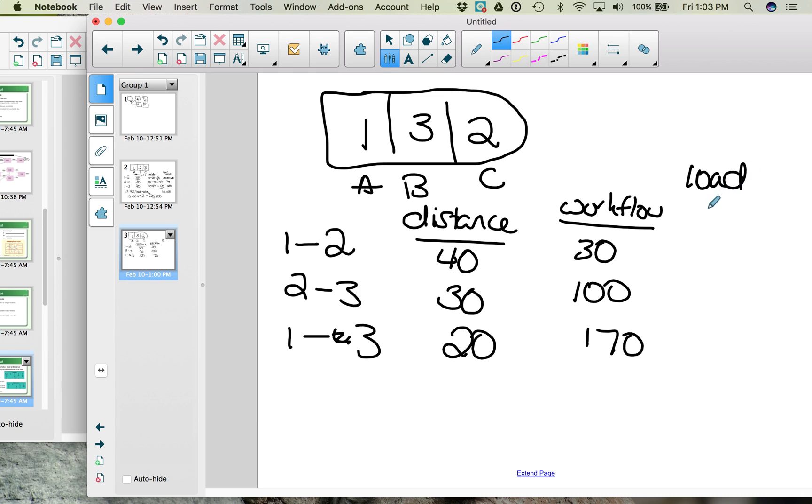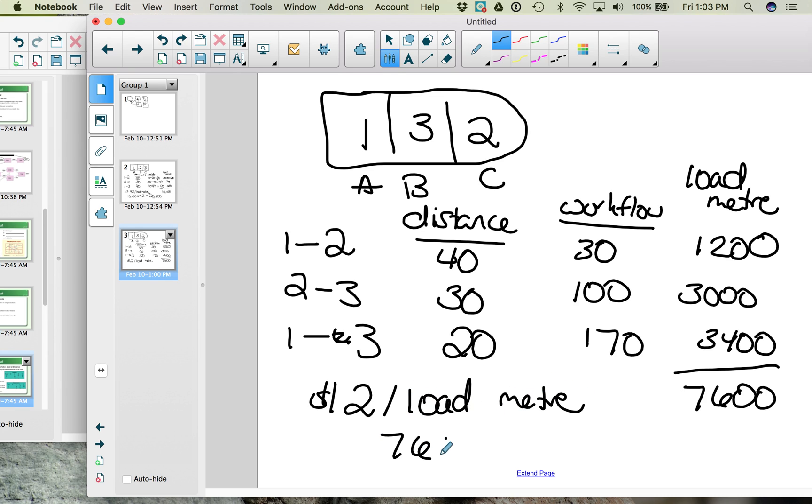Now we need to find our load meters. Let's take 40 times 30 and we get 1200. 30 times 100 gives us 3000. And 20 times 170 gives us 3400. When we add these three together, we get 7600. The total cost, if it's still $2 per load meter, is now 7600 times 2, which is $15,200.